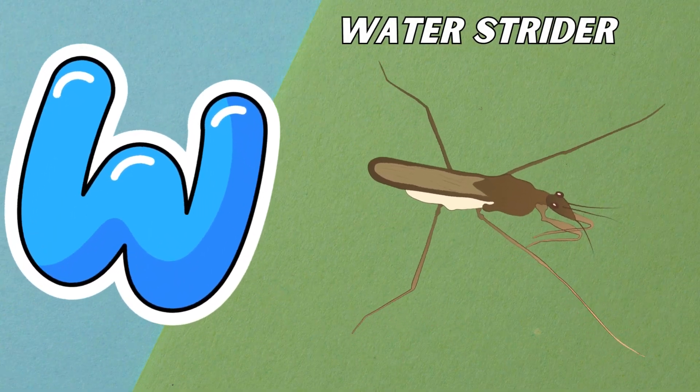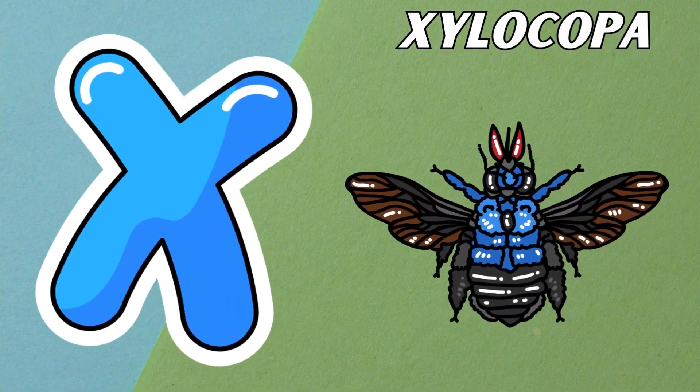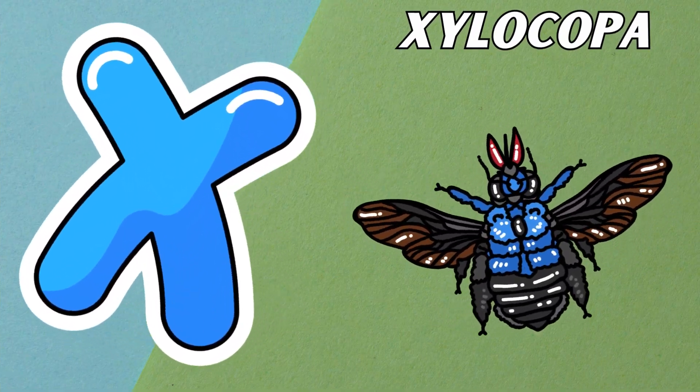Velvet Ant. W is for Water Strider. W, W. Water Strider. X is for Xylocopa. X, X. Xylocopa.